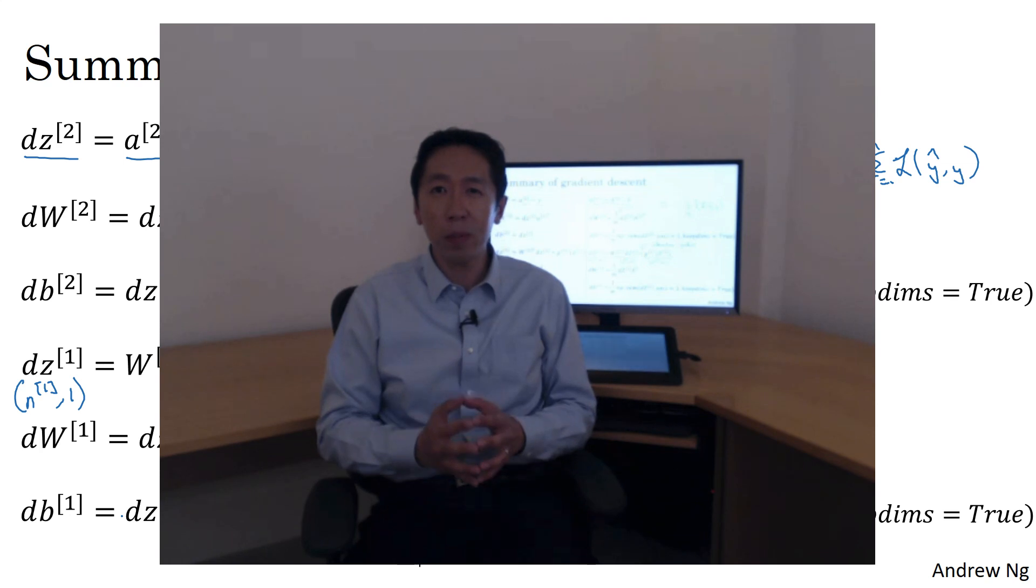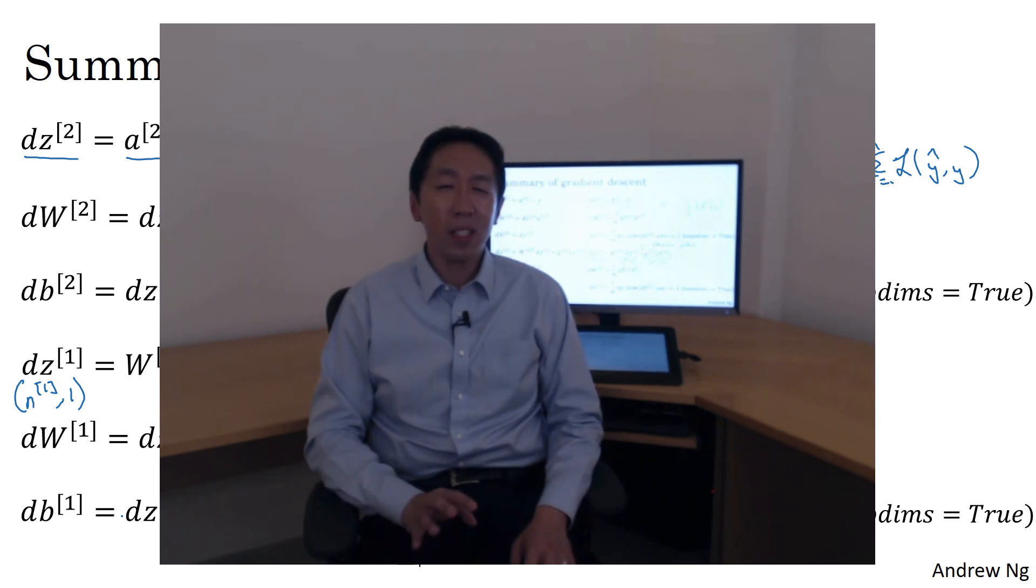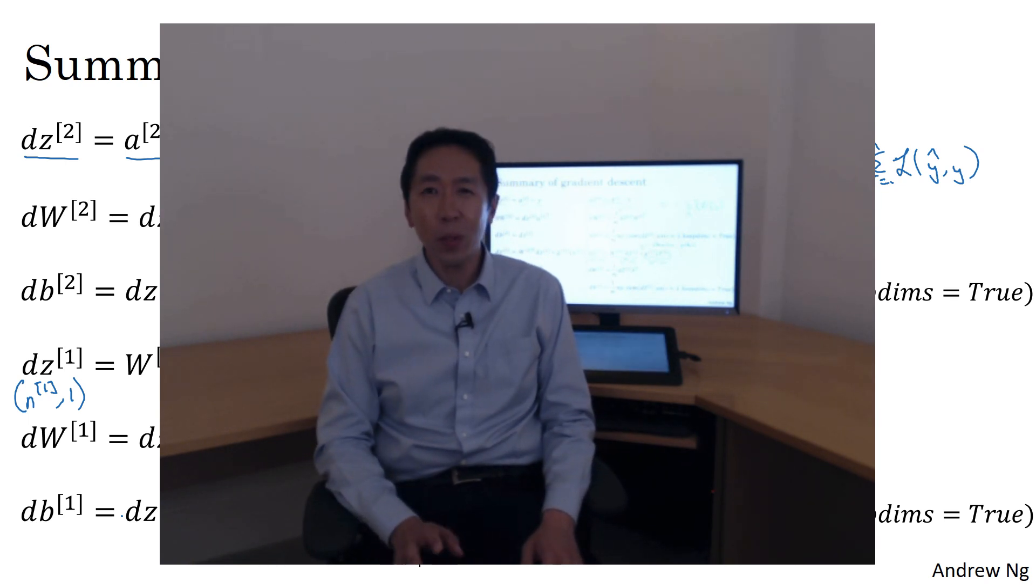So if you are an expert in calculus, do see if you can derive the whole thing from scratch. It is one of the very hardest pieces of math, one of the very hardest derivations that I've seen in all of machine learning. But either way, if you implement this, this will work and I think you have enough intuitions to tune it and get it to work.